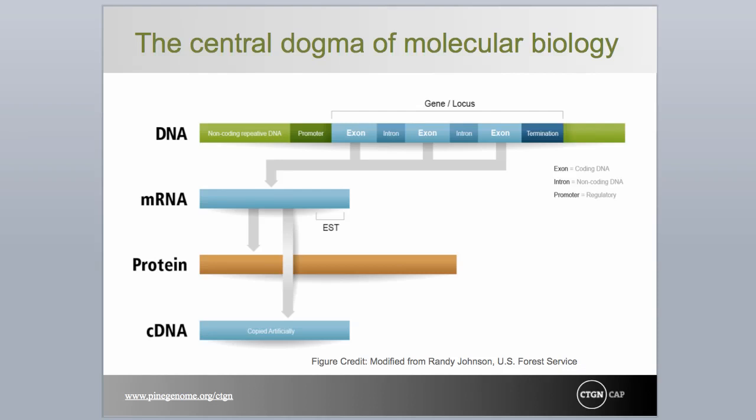To close this bit of introductory material, we take an alternative view of the central dogma to review and expand on some of the concepts covered so far. We begin at the top, with DNA. A locus, or gene, is denoted as occurring within a stretch of non-coding, repetitive DNA, the likes of which make up much of the genome of many higher plants. The gene is composed of exons and introns, is preceded by a promoter or regulatory region, and possesses a termination sequence.